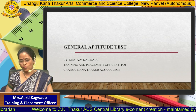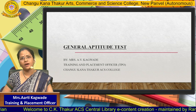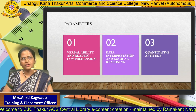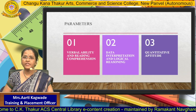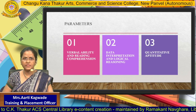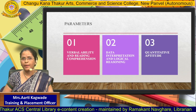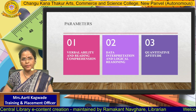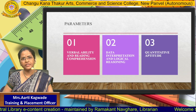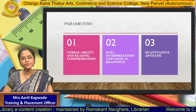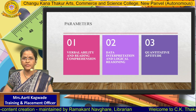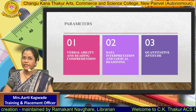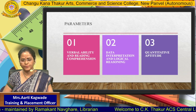Today, let us see what are the areas covered in Aptitude Test. The various parameters covered in General Aptitude Test would be: first, verbal ability and reading comprehension; second, data interpretation and logical reasoning; and third, quantitative aptitude.